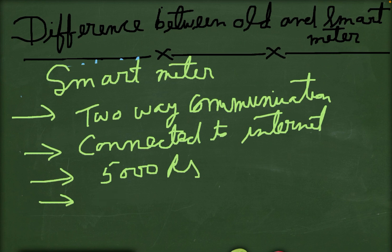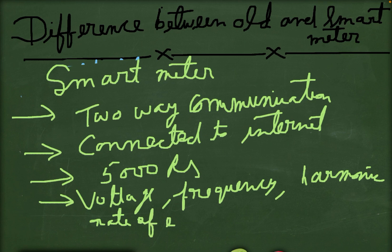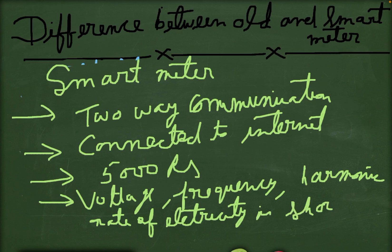The smart meter monitors voltage, frequency, and harmonics, and the rate of electricity. All of these parameters — voltage, frequency, and harmonics — are shown on the meter screen.